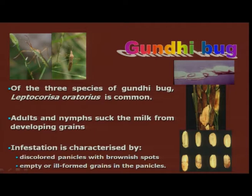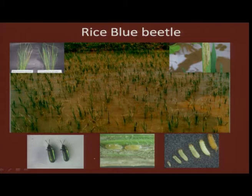Gandhi bug is another important sucking pest with many species; particularly Leptocorisa oratorius or acuta is one of the important ones. Both adults as well as nymphs suck the milky or filling sap from the developing grain. Because of its sucking nature, we see discolored panicles with chaffy grains.